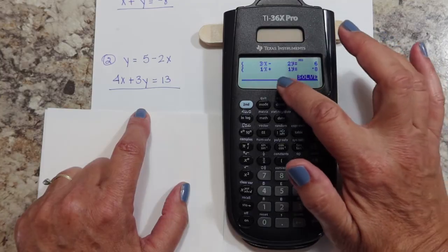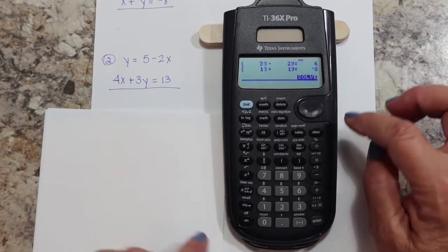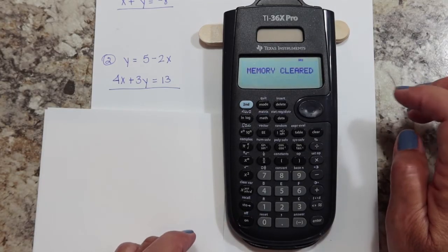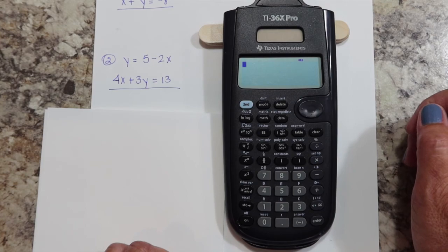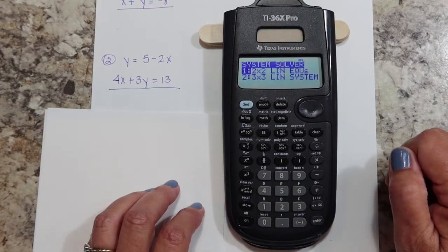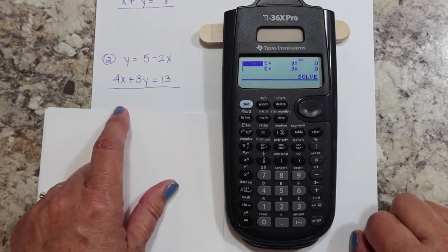This is the remainder of the problem that I just did. I want to clear it off, but you see when I hit clear, the information that I input is still in here. So it's best to go ahead and do a whole memory clear, press both of those buttons, and that gets rid of everything. Now we're going to start over. I'm going to hit second and then the system solver. I'm still doing a two by two, so I'm going to hit enter.